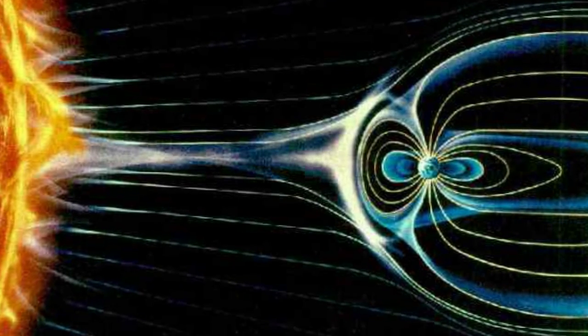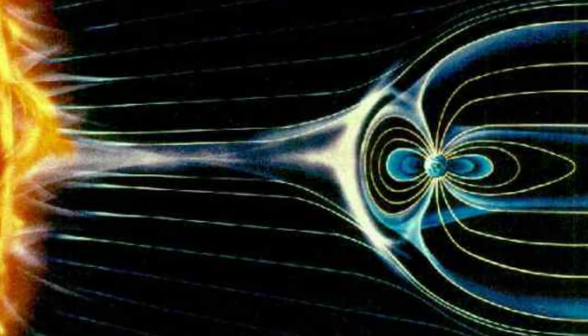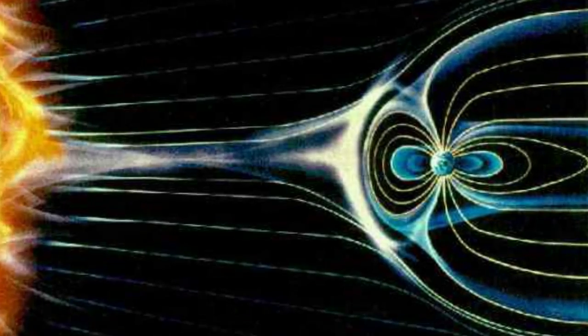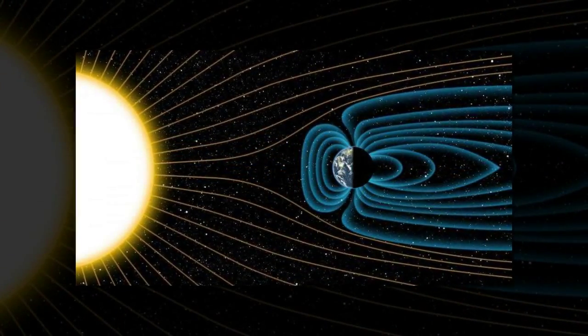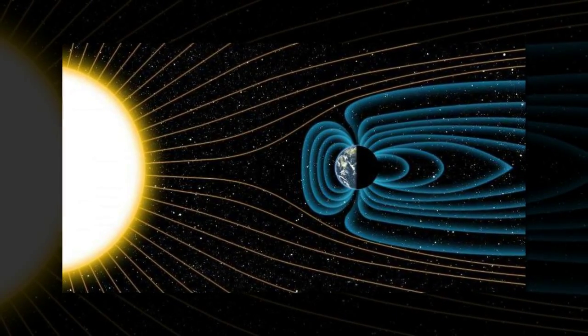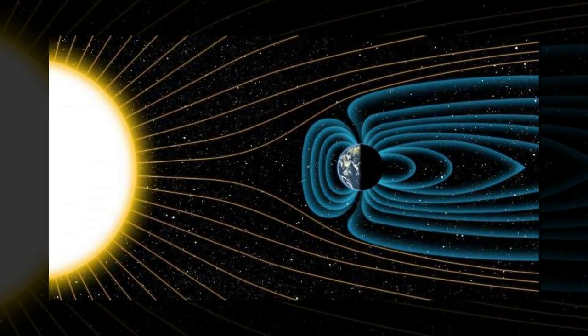Since 2010, the best estimate of the age of Earth's magnetic field has been 3.45 billion years. But now a researcher responsible for that finding has new data showing the magnetic field is far older.